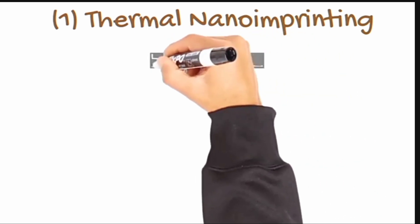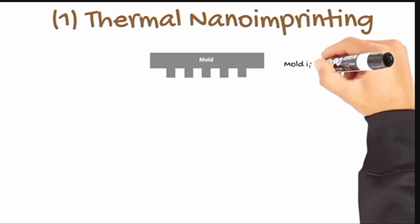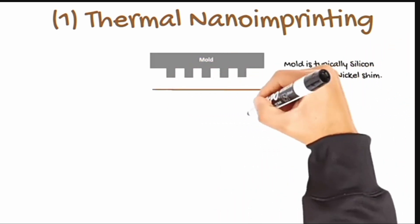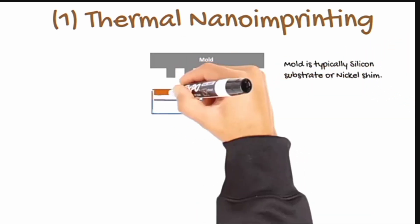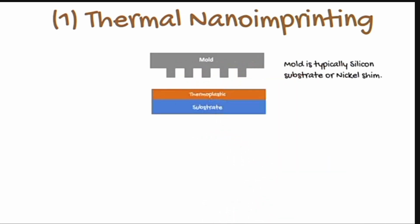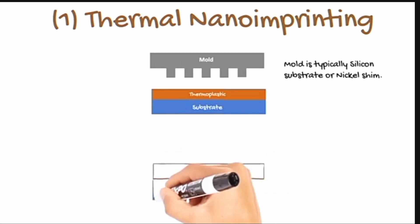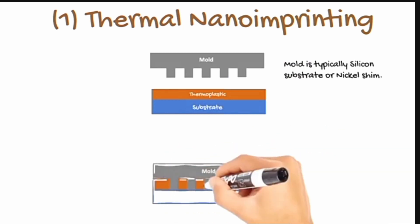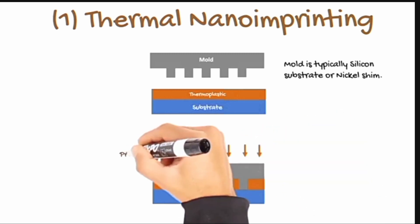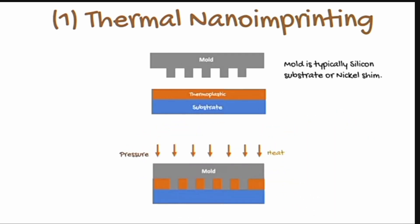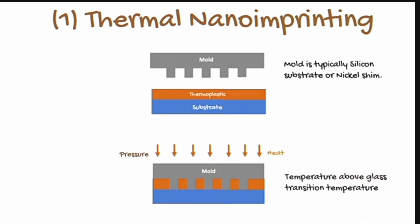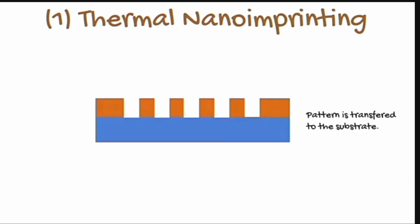In thermal imprinting, we consider a mold. A mold is typically a silicon substrate or nickel mold. The orange color represents the rigid or thermoplastic resist. The mold can be pressed using heat at a temperature above the glass transition temperature. The mold pattern can be removed from the resist or thermoplastic after the pattern is transferred to the substrate.